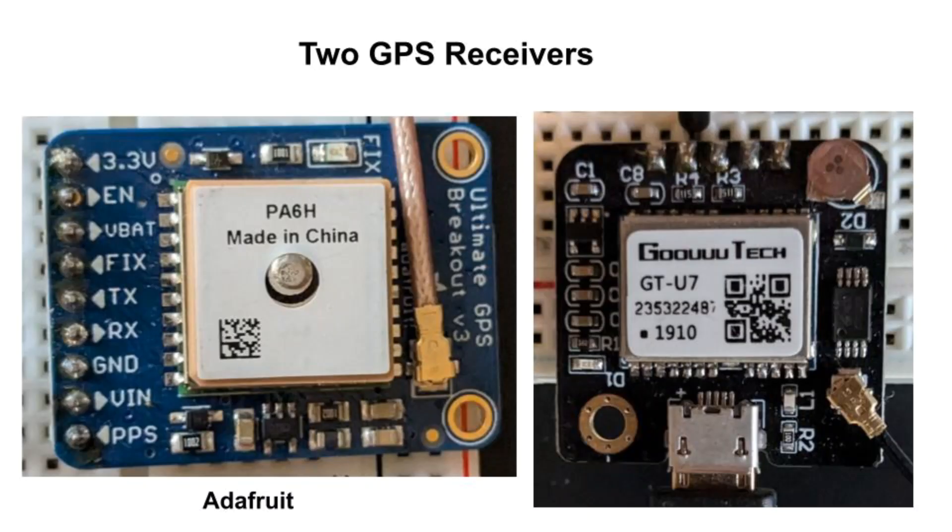What we can do is measure the similarity between the two GPS receivers. Specifically, these two GPS receivers. One is from Adafruit. I bought it years ago. The other is a cheap module that I think is still available from Amazon.